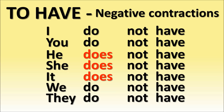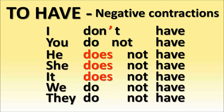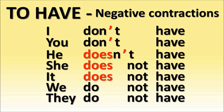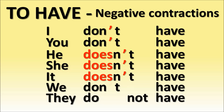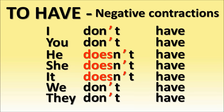To have — negative contractions: I don't have, you don't have, he doesn't have, she doesn't have, it doesn't have, we don't have, they don't have.